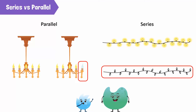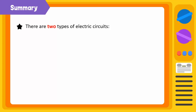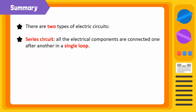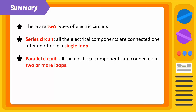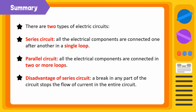Good job! Let's summarize. There are two types of electric circuits. A series circuit is one in which all the electrical components are connected one after another in a single loop. A parallel circuit is one in which all the electrical components are connected in two or more loops. A disadvantage of the series circuit is that a break in any part of the circuit stops the flow of current in the entire circuit, but a break in any part of the parallel circuit does not.